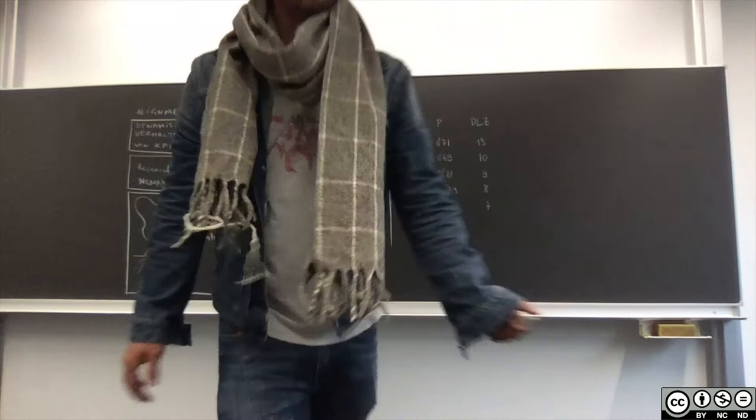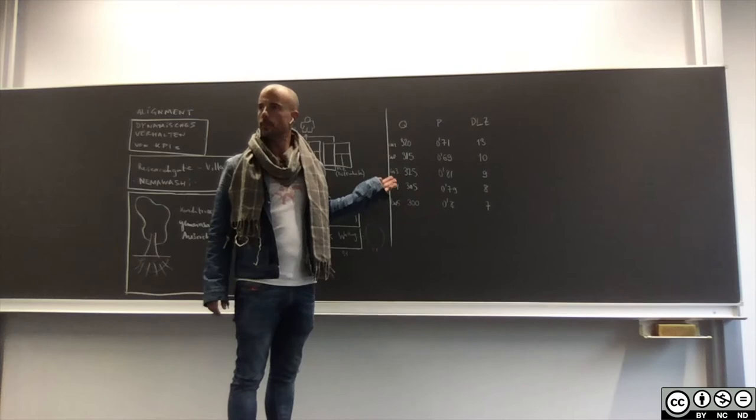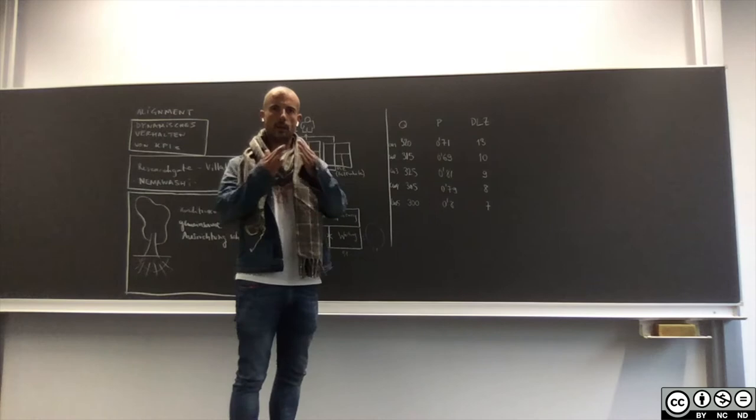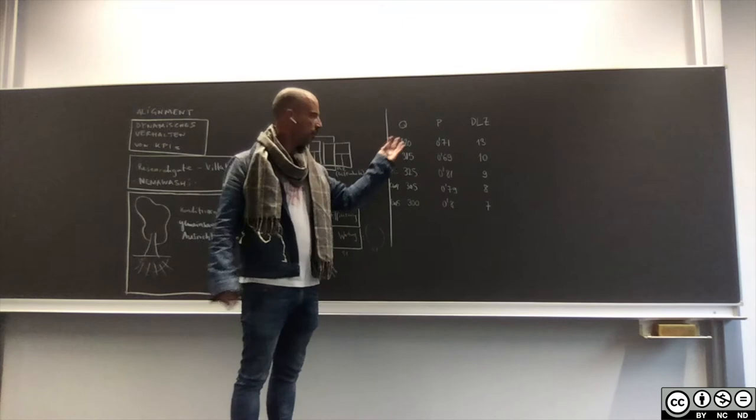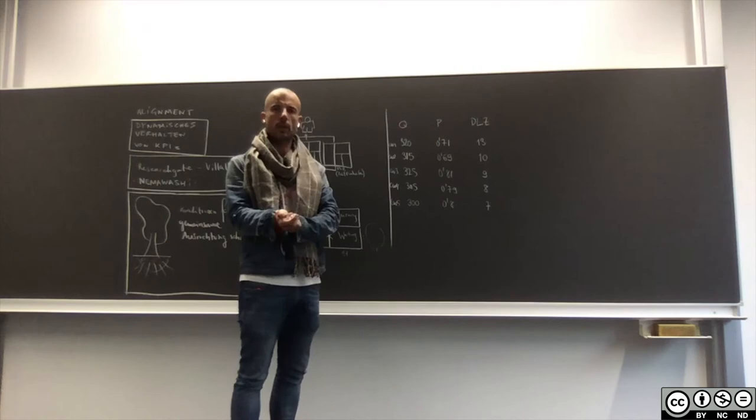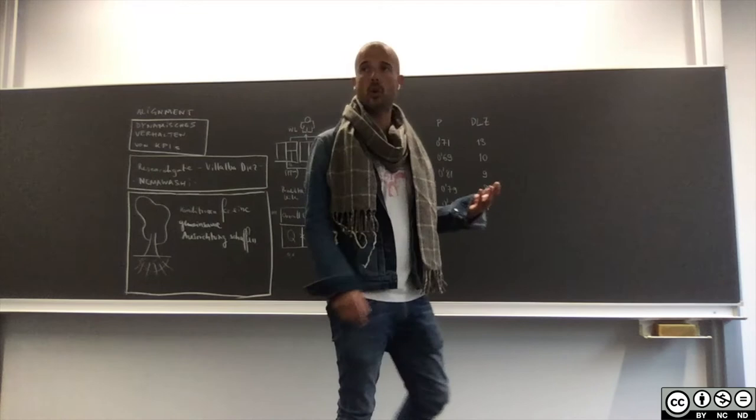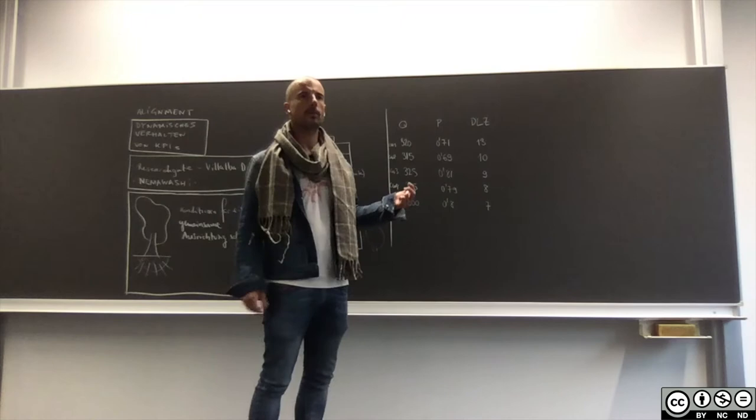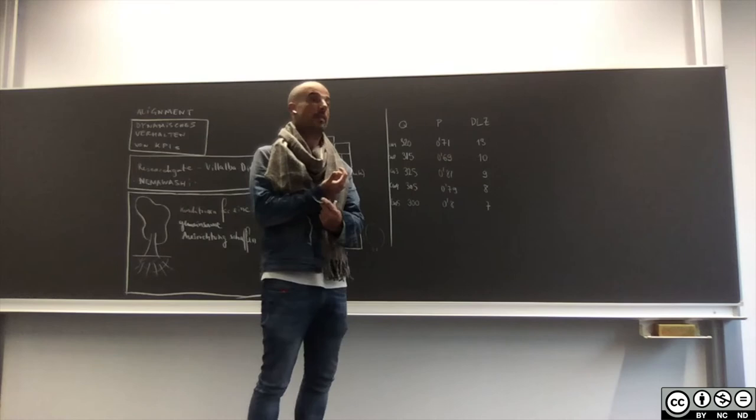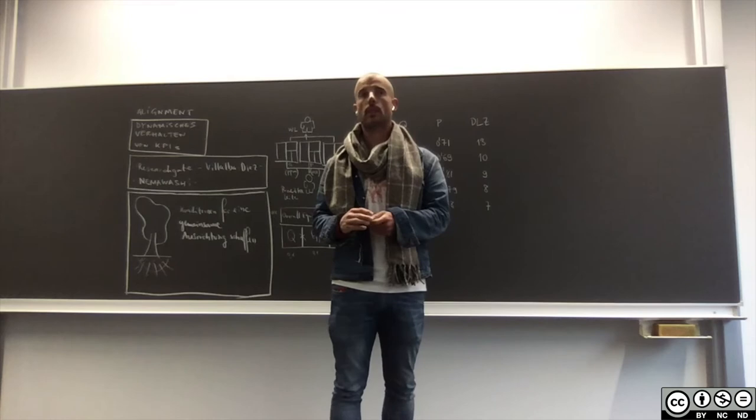Also die Frage, die wir uns stellen ist, ist dieses System in Alignment oder nicht? Sind diese KPIs, gehen die in eine gemeinsame Ausrichtung oder gehen die voneinander unabhängig weg? Und diese Frage werden wir heute beantworten mit einer bestimmten Methode, nämlich ist es Nemawashi. Wenn es im großen Stil geht, braucht man sogar genetische Algorithmen, um sowas zu lösen. Wir machen es heute mit der Kreide und mit ein bisschen Papier, aber wenn es groß geht, braucht ihr halt das Know-how von dem Paper. Deshalb möchte ich, dass ihr das eigentlich einstudiert.